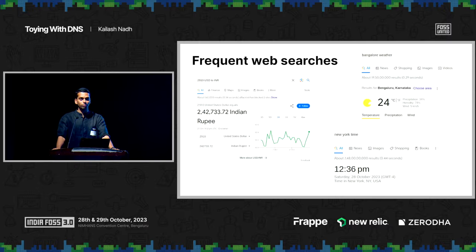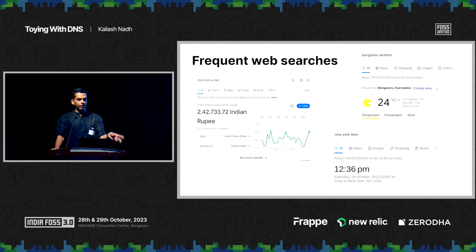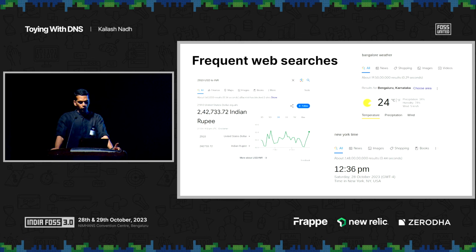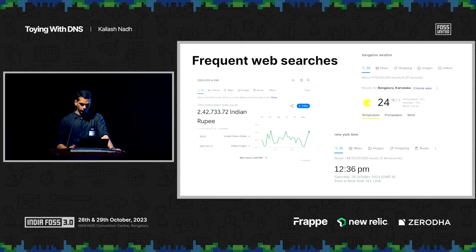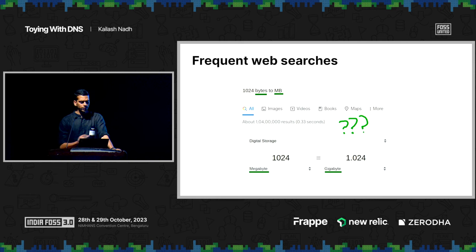There are a bunch of frequent web searches that I do — I'm pretty sure many of us do: quick local weather check, currency conversion, disk size bytes to MB, MB to GB, quick conversions. You quickly plop them into your search engine, Google, and you get a response. This always felt a little odd to me because the actual query — let's say 'Bangalore weather' — is maybe 15 bytes, but the response is a super bloated web page with hundreds of KB of JavaScript assets, CSS, etc., just to give me a tiny little answer. It always bugged me.